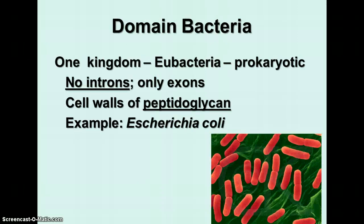The second domain is domain Bacteria. There is also one kingdom in domain Bacteria: kingdom Eubacteria. These are also prokaryotic — these are your common, everyday bacteria, the ones you are used to coming in contact with. Their DNA has no introns; it only has exons, so every bit of their DNA is transcribed and translated into proteins. Cell walls of domain Bacteria have peptidoglycan, a protein-starch complex unique to members of domain Bacteria. An example of a eubacterium is Escherichia coli, or E. coli.